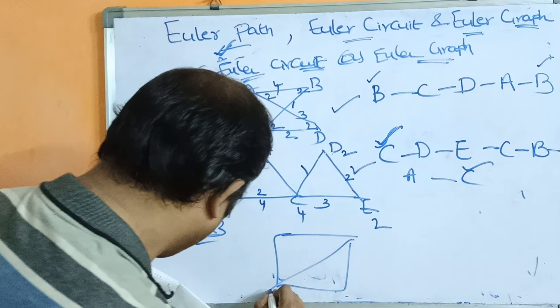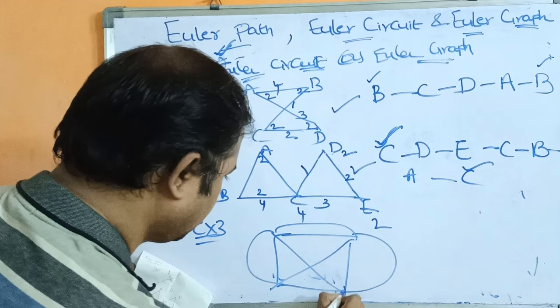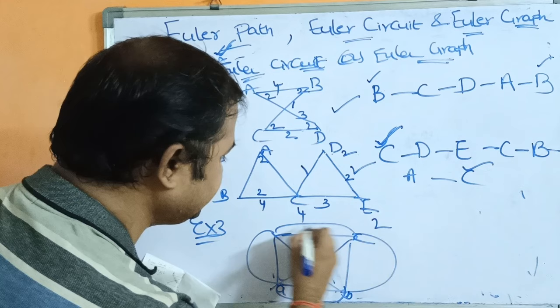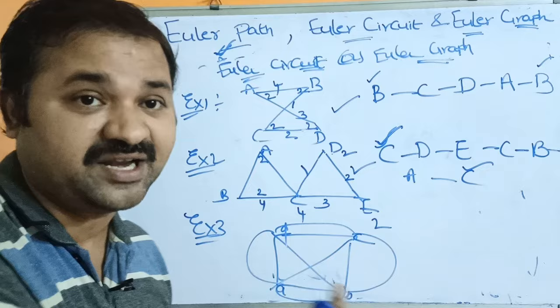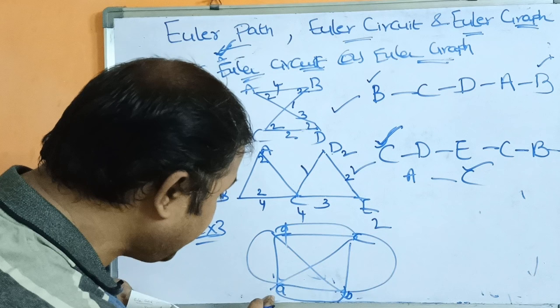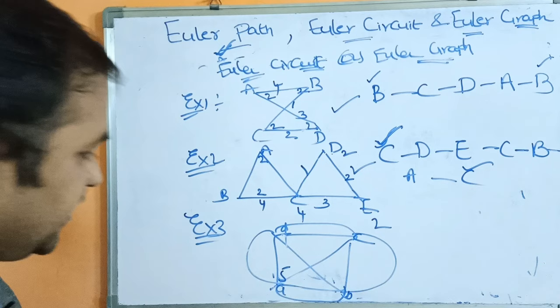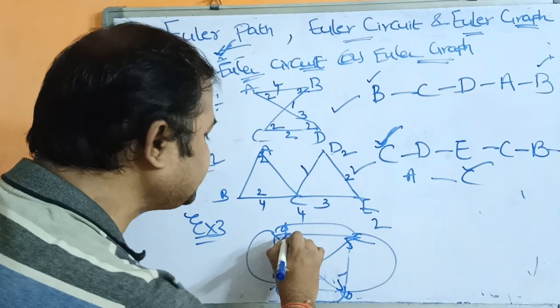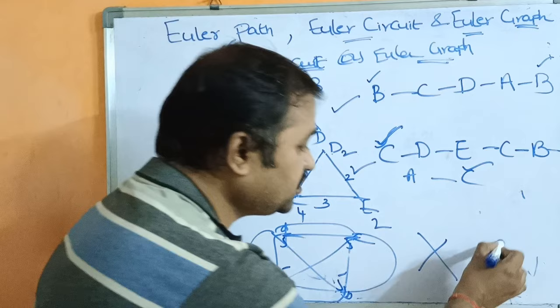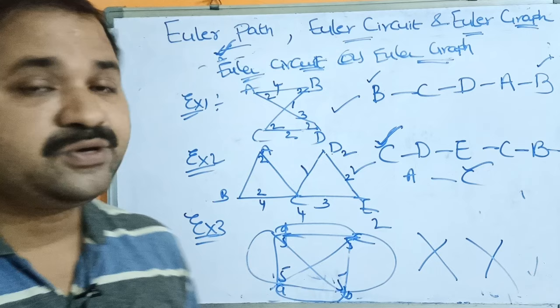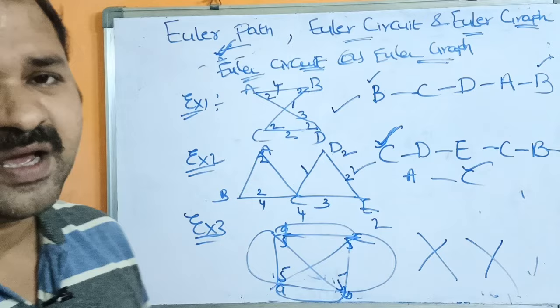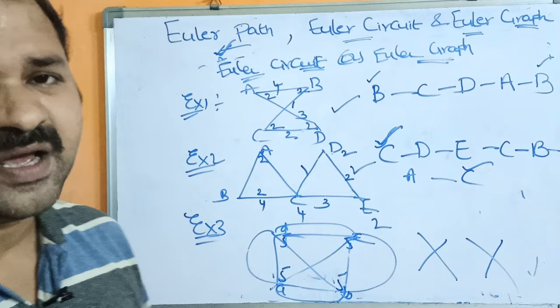Let us see the last example. We have vertices A, B, C, D. Let us check whether this graph contains Euler circuit. Degree of A is 5 and degree of B is 5 — every vertex degree is odd. So we can say this graph does not contain Euler circuit and is not an Euler graph. This concludes the discussion on Euler path, Euler circuit, and Euler graph. In an examination, the question may be on any of these, and if asked about Euler graph, we need to explain all these concepts.